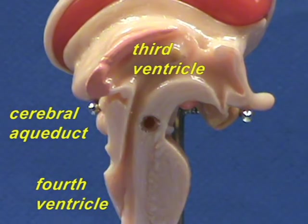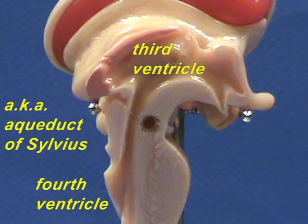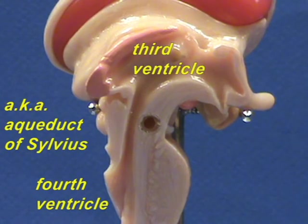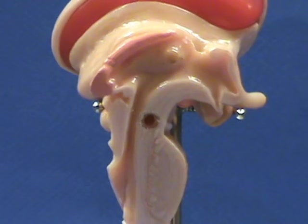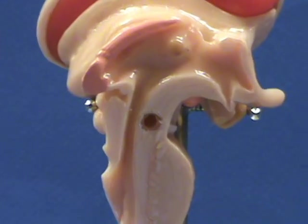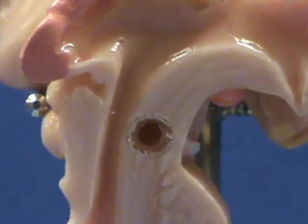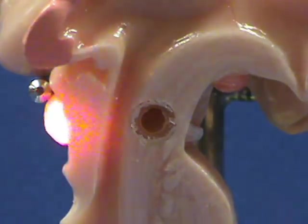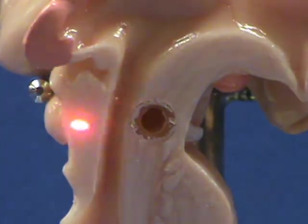has been originally called the aqueduct of Silvius, but it is now also simply known as the cerebral aqueduct or the aqueduct of the midbrain. So let's zoom in on the midbrain and the posterior side of the midbrain,